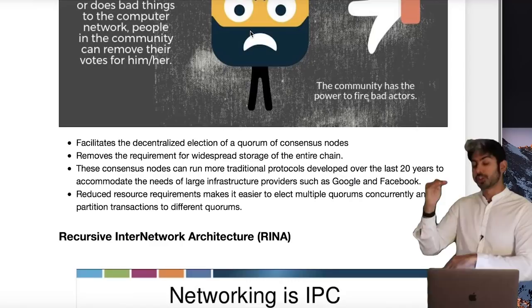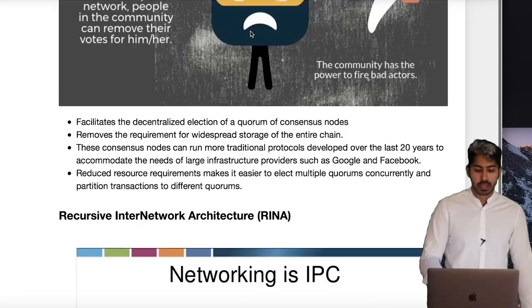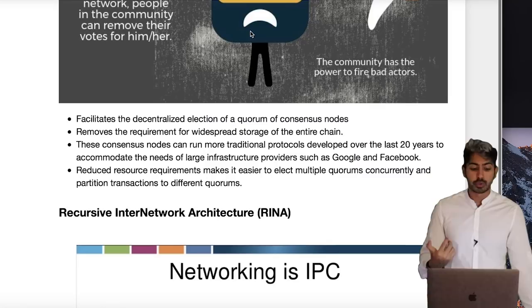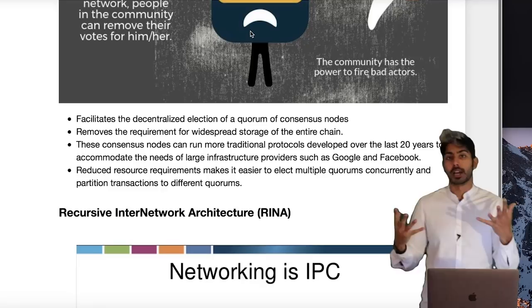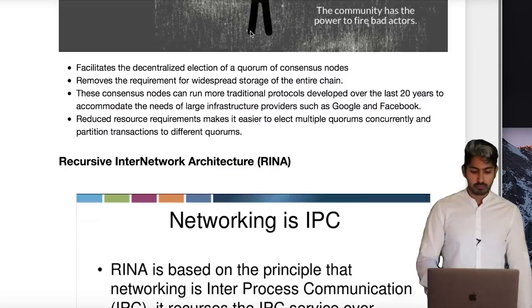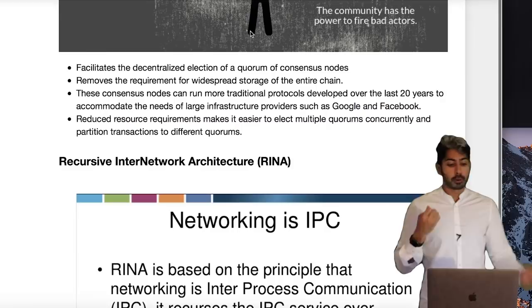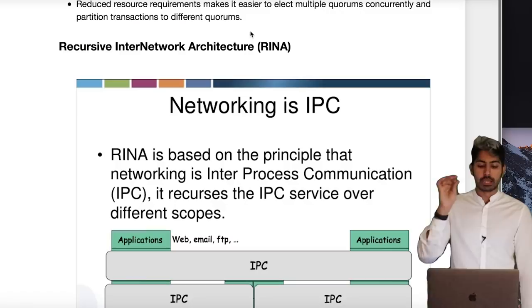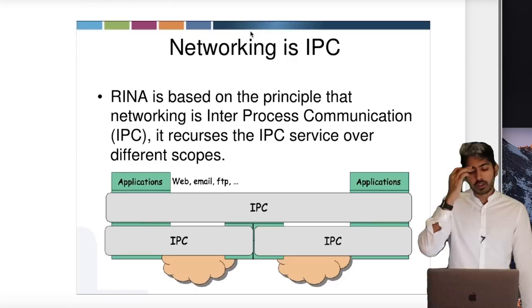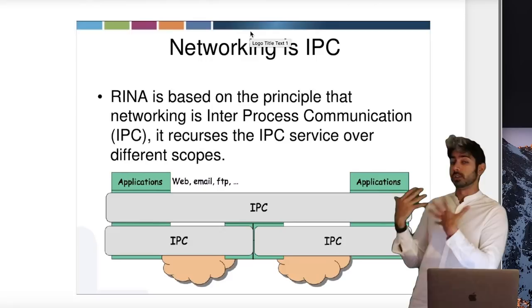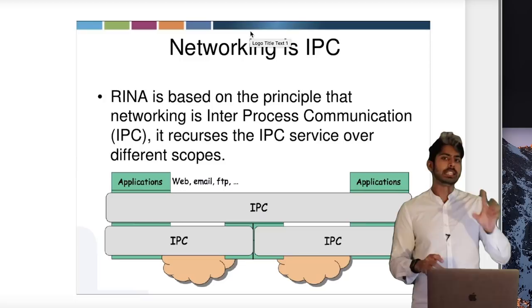These consensus nodes can run more traditional protocols developed over the last 20 years to accommodate large infrastructure providers like Google and Facebook, because these nodes have been democratically elected by the network. It reduces resource requirements, making it easier for multiple quorums to concurrently partition transactions. The Recursive Internetwork Architecture (RENA) solves the problem of bandwidth — it's an alternative to TCP/IP that is more suited for decentralized applications and nodes that are completely decentralized.